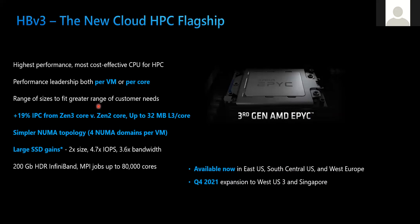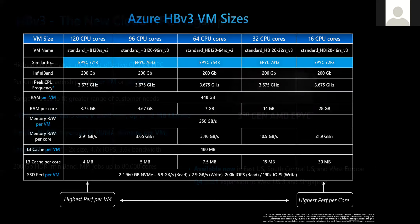This summer we announced HBv3, featuring the newer generation AMD Milan processors. We launched it the same day Milan was announced to the world, and even from HBv2 — which had been launched just about six months prior — we saw a 20% performance improvement at the same cost per VM.